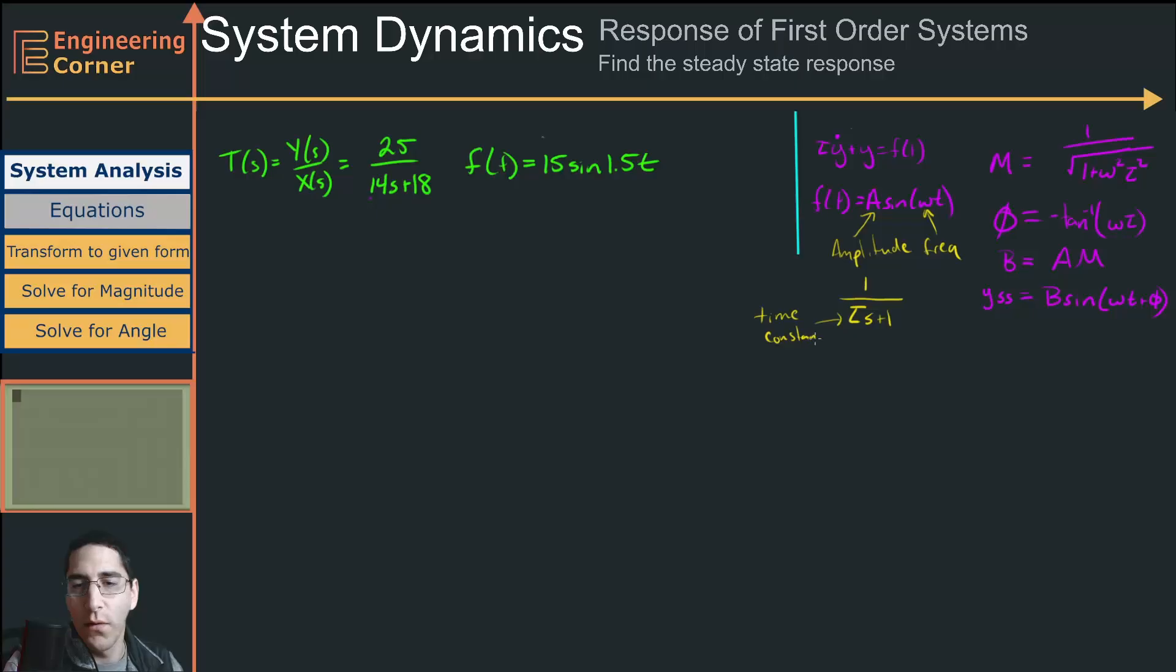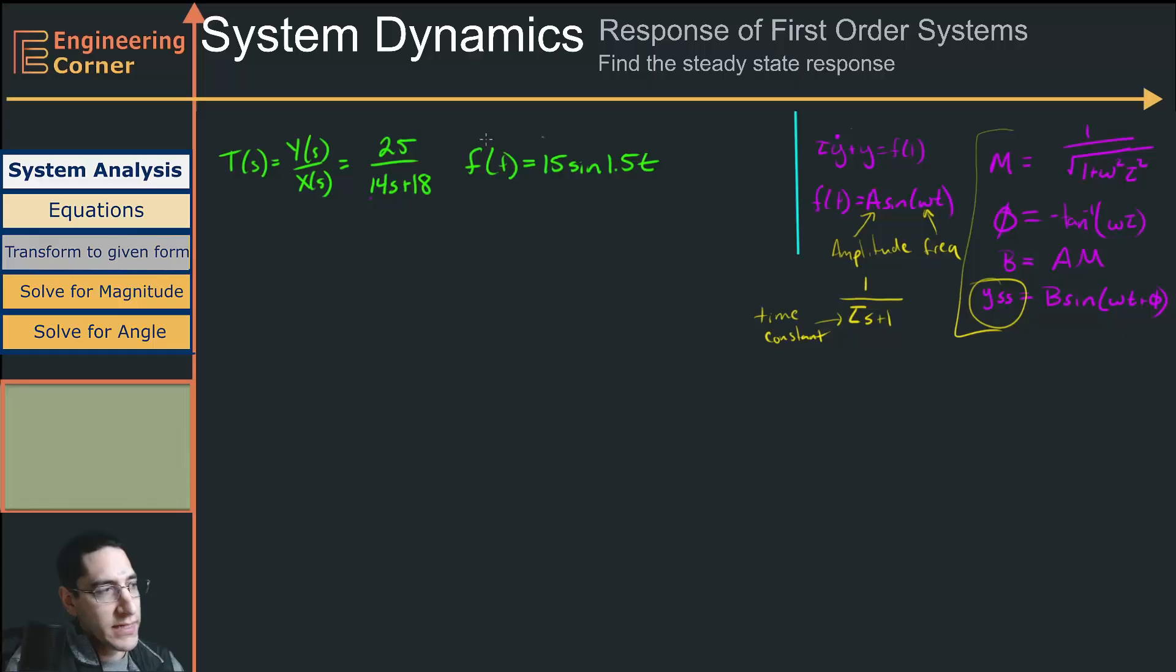...then we're able to use these equations right here and just go down the list and get our steady-state equation. So the first thing that is true is we do have an input function that's in this form. So a is equal to 15, omega is equal to 1.5.